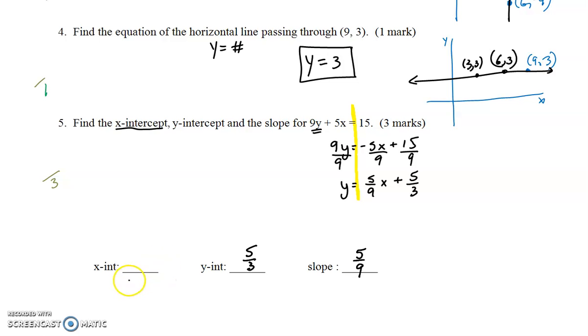Now, to try and get the x-intercept out of this is a little more tricky, and I would actually go back to the original, and say 9y + 5x = 15, and you get your x-intercept by making the y equal to 0. So this term is going to disappear, and you'll be left with just 5x = 15, which you can reduce, or isolate the x, and you get x = 3.